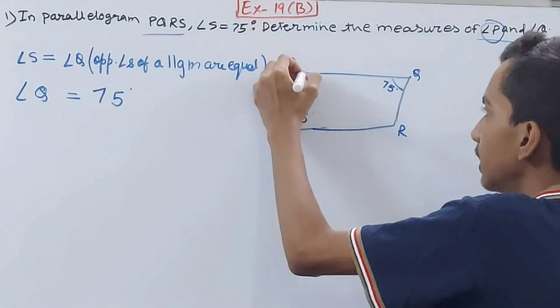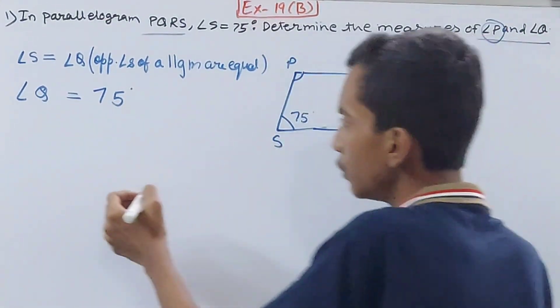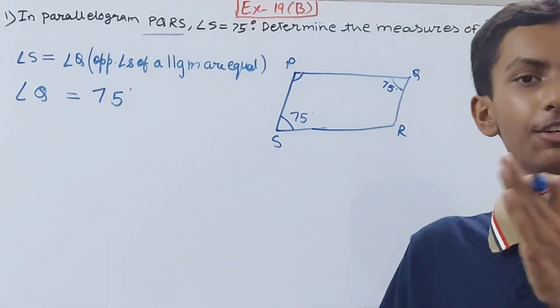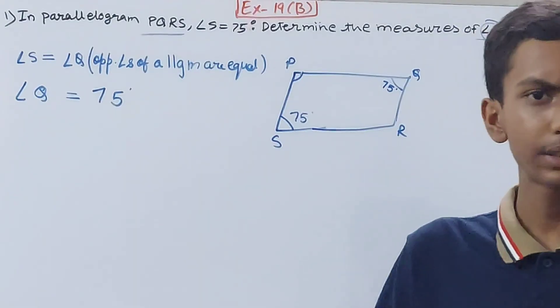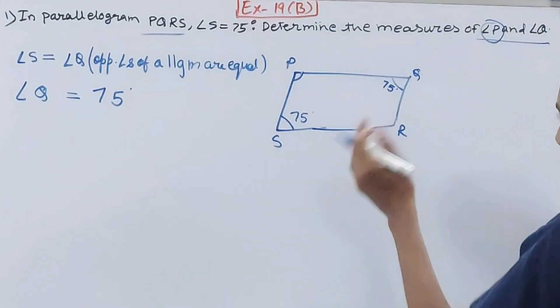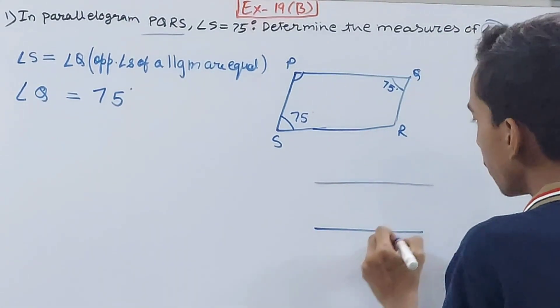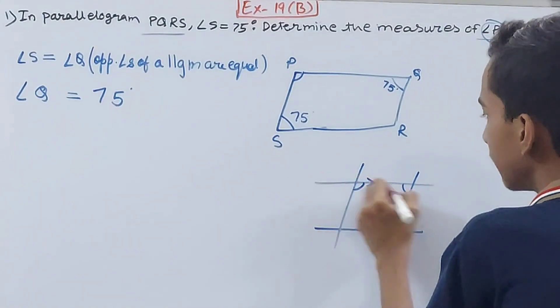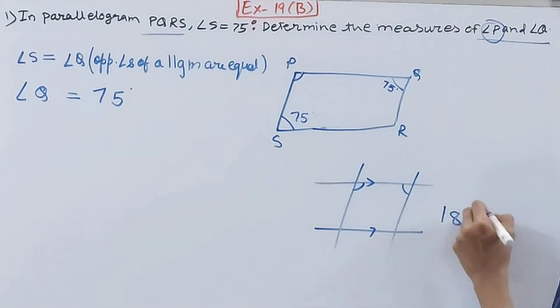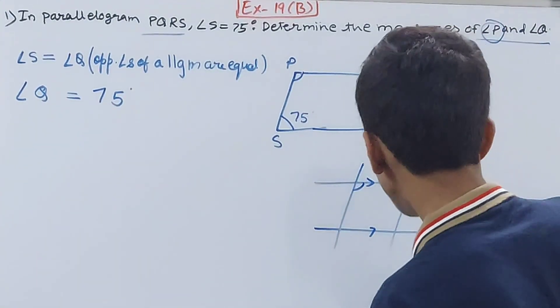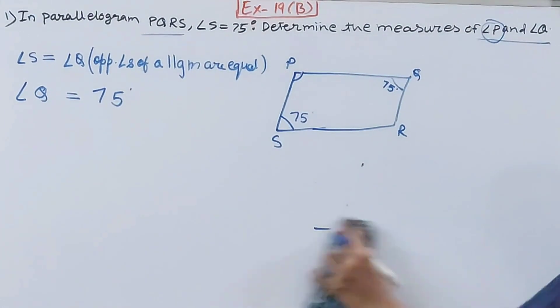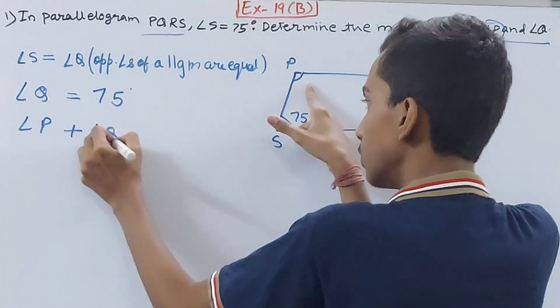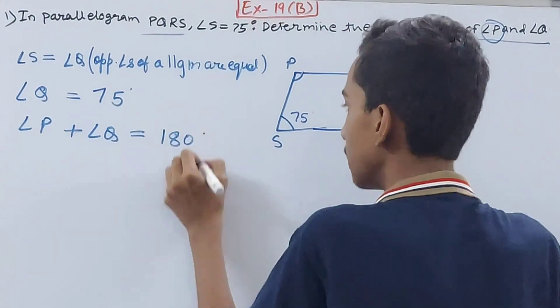What else do we need to find? Angle P. We will use the property of parallel lines. When the transversal intersects two parallel lines, the co-interior angles are supplementary. In the parallelogram, these two lines are parallel. Co-interior angles are supplementary, meaning their sum will be 180 degrees. So we will have angle P plus angle Q equals 180 degrees.